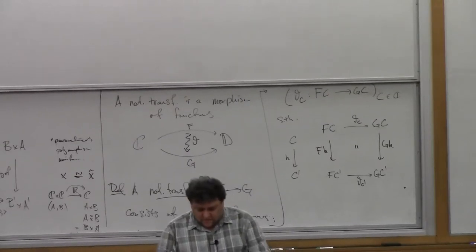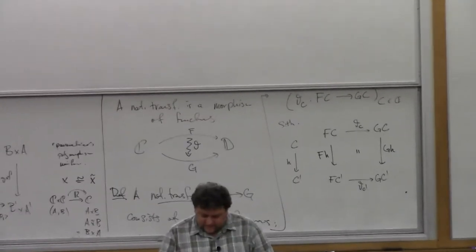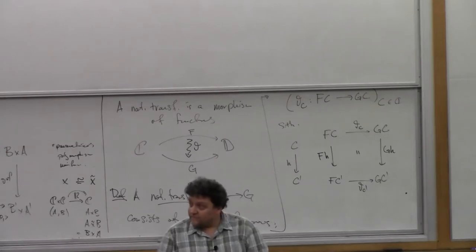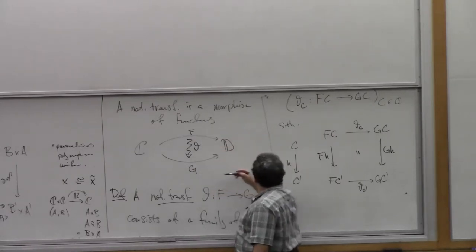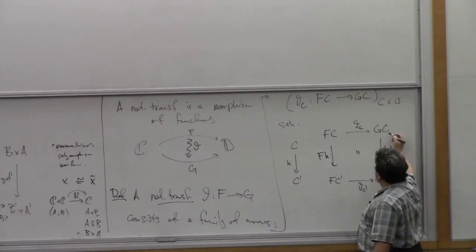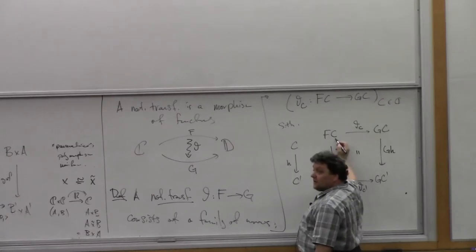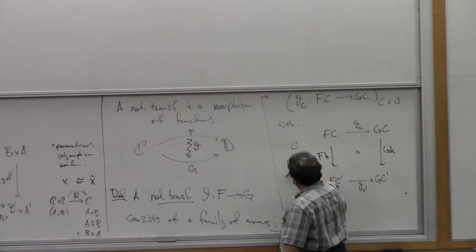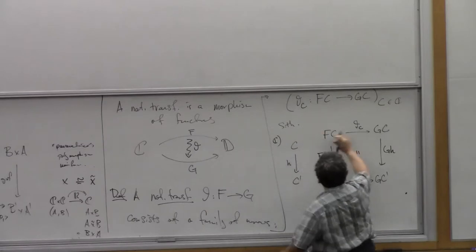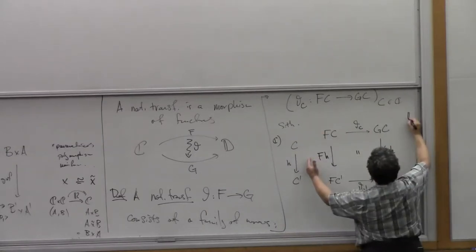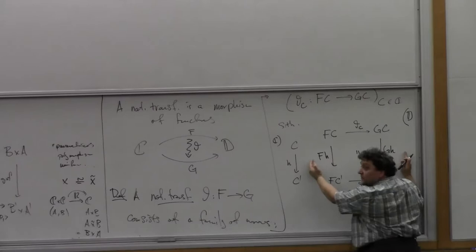Question from student: 'I thought a functor went from a category to a category.' Absolutely. F and G are the functors right here. I apply F to C and I get an object in D. This little piece of the diagram right here is in the category C. And then this commutative square is in the category D. It's a condition that says for every arrow in C, I get a commutative square like this.